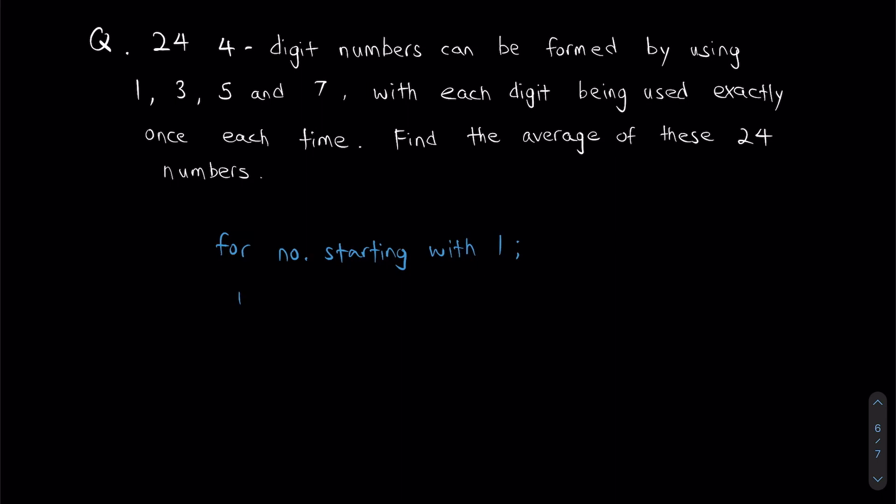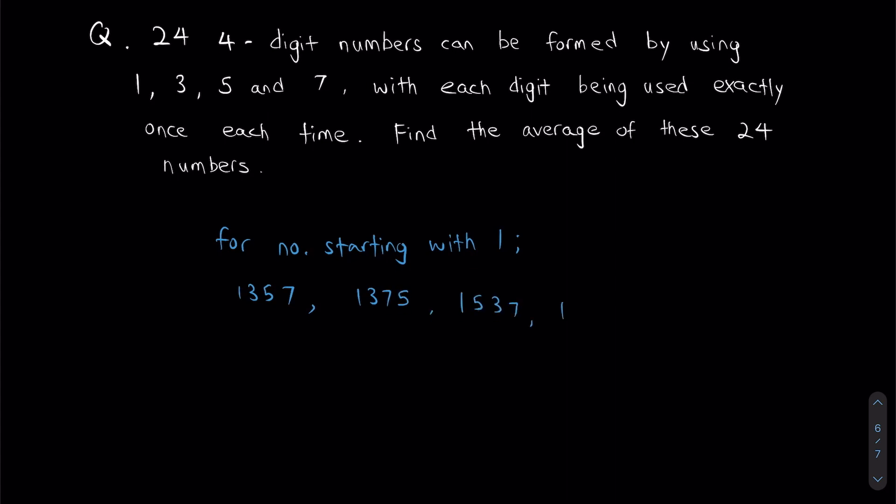For numbers starting with 1, there are actually six different numbers, and these are the numbers: 1357, 1375, 1537, 1573, 1735, 1753.